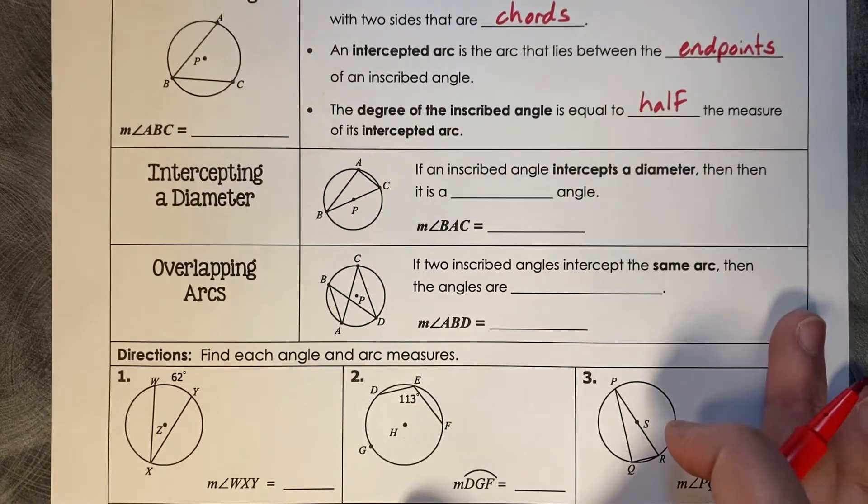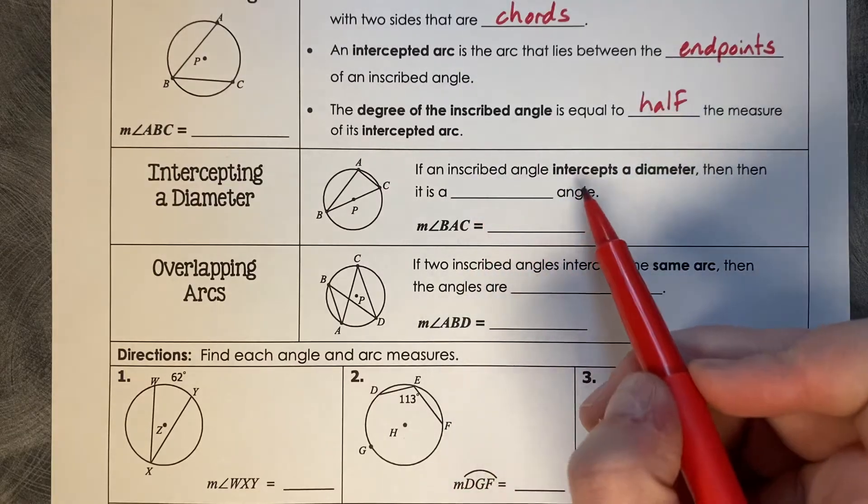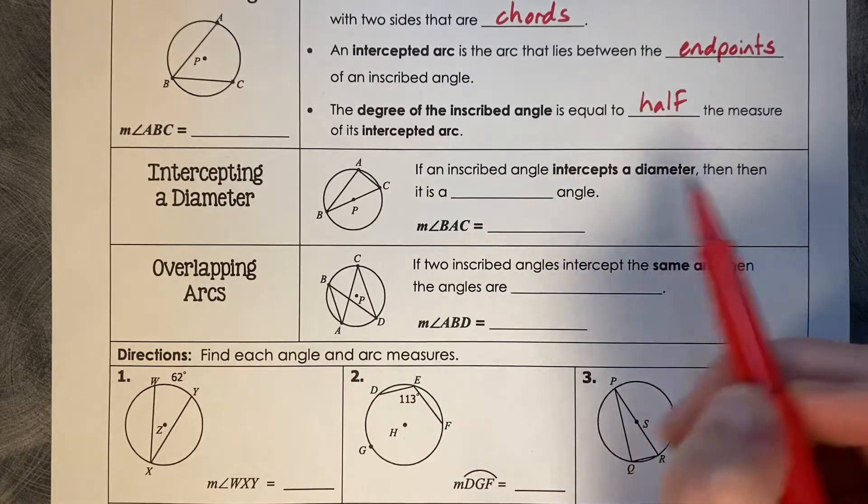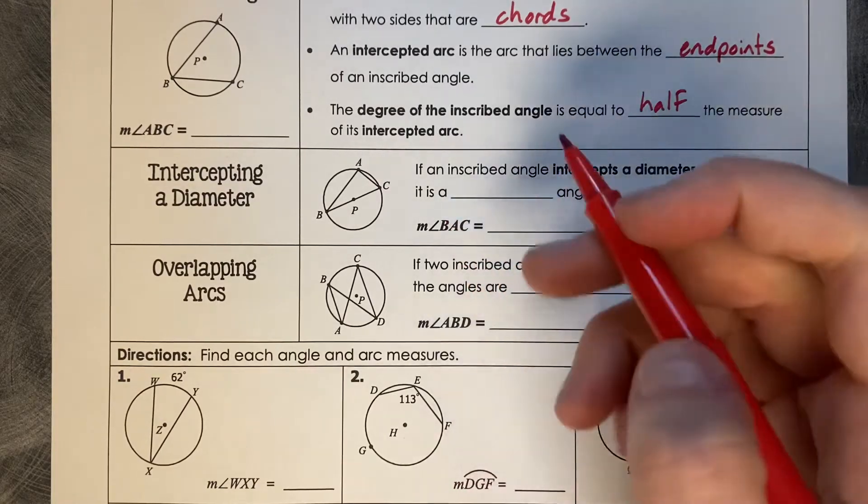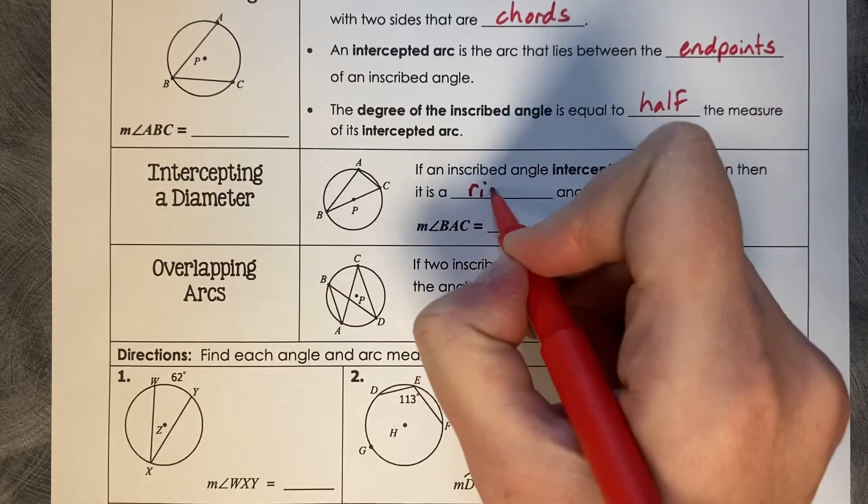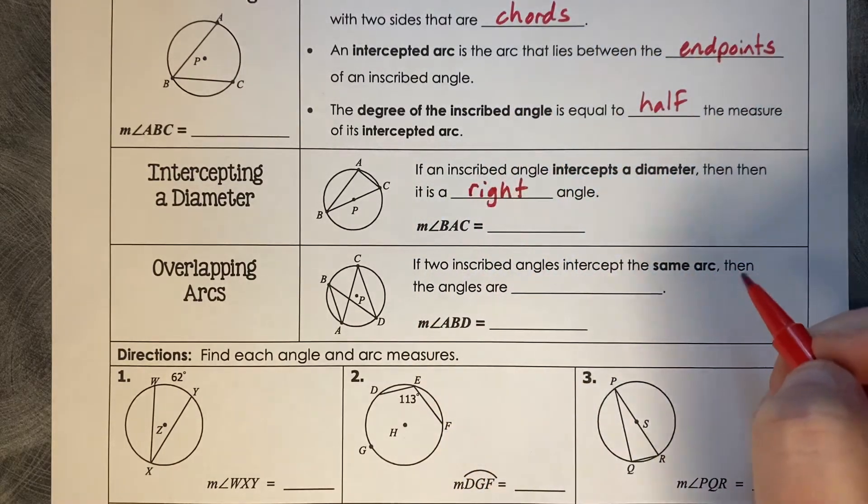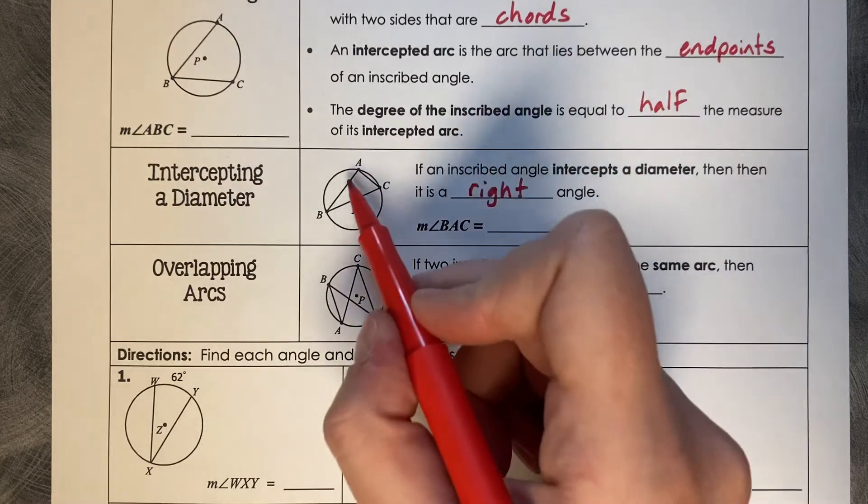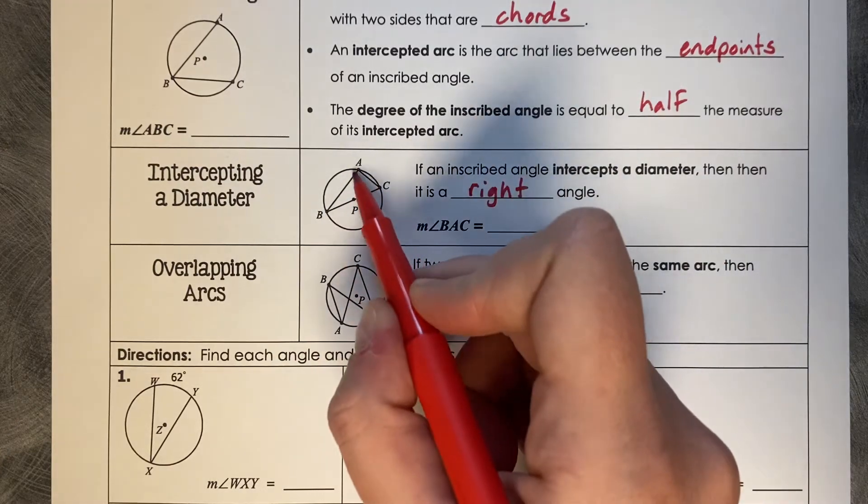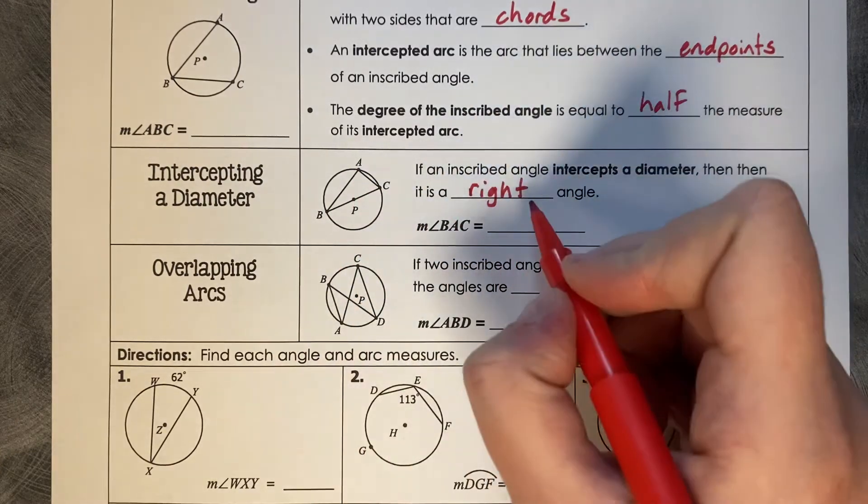Intercepting a Diameter. If an inscribed angle intercepts a diameter, then it is a right angle. So the measure of BAC, this guy right here, is 90 degrees.